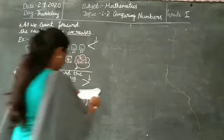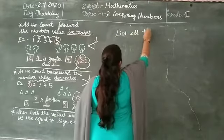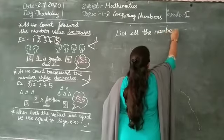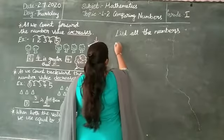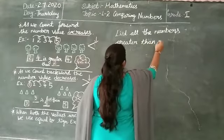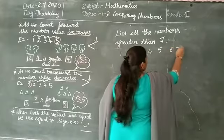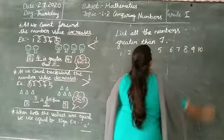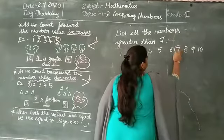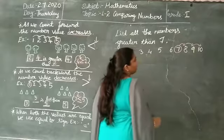For example, here are some problems for you — list all the numbers greater than 7. Let's do this: 1, 2, 3, 4, 5, 6, 7, 8, 9, and 10. So we should find numbers greater than 7. Circle the 7 and count forward — 8, 9, and 10.